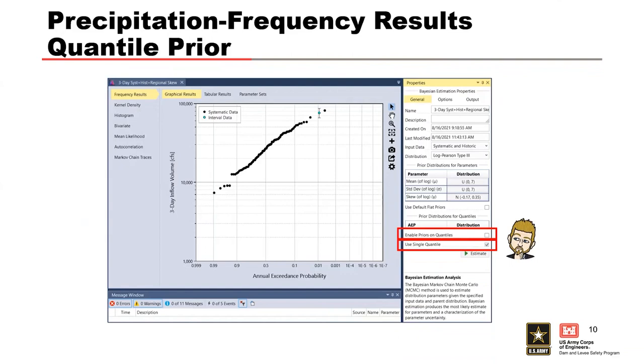The number of quantiles has to do with the math and the matrices inside the math. You have to have the same number of quantiles for the same number of parameters. So, three for three. If you have a two parameter distribution, you have two quantiles. But you always have the option to use one.